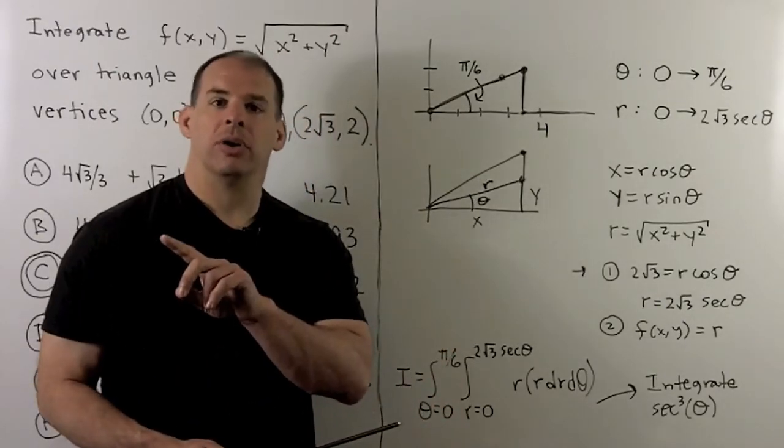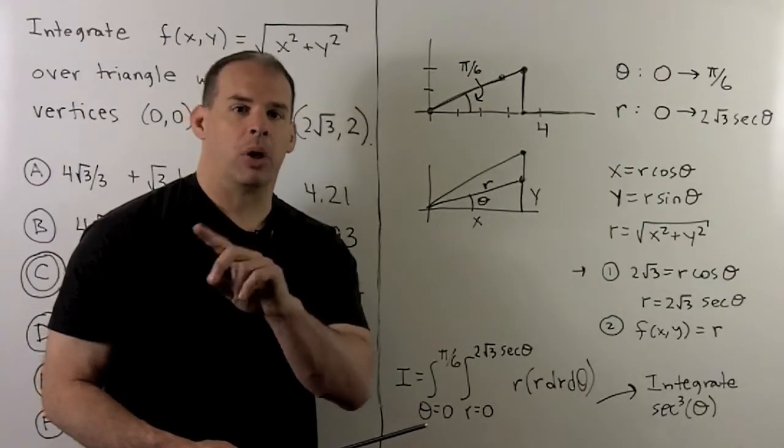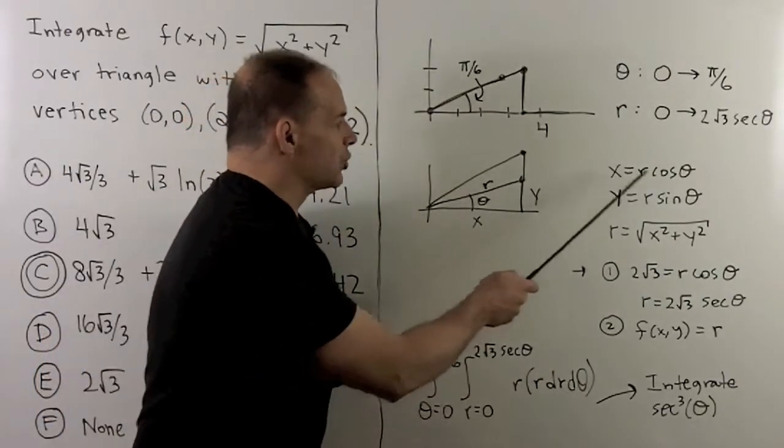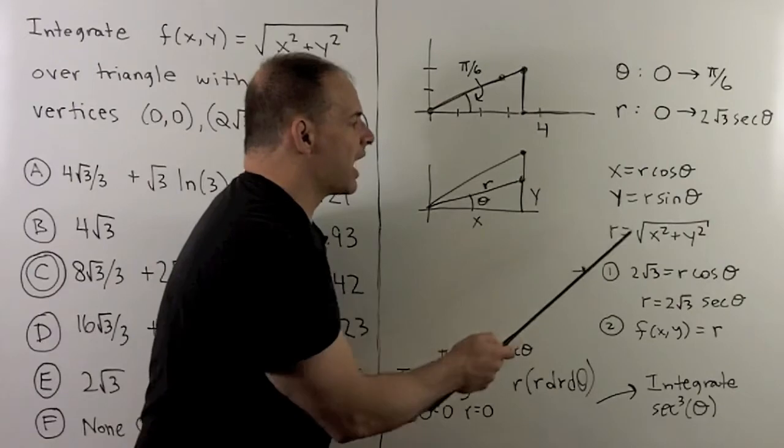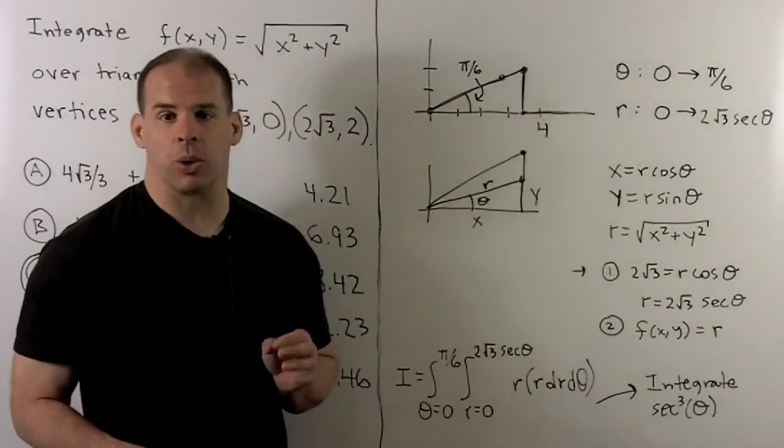There are formulas to convert from rectangular to polar and back. Then x is r cosine theta, y is r sine theta, r is equal to square root of x squared plus y squared.